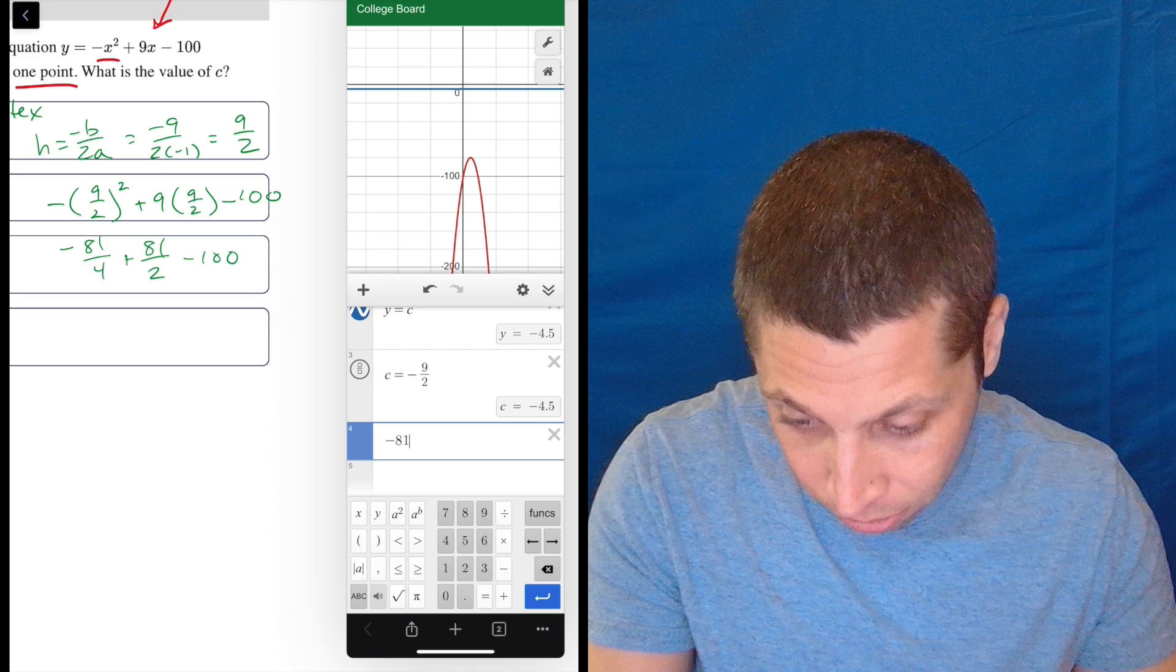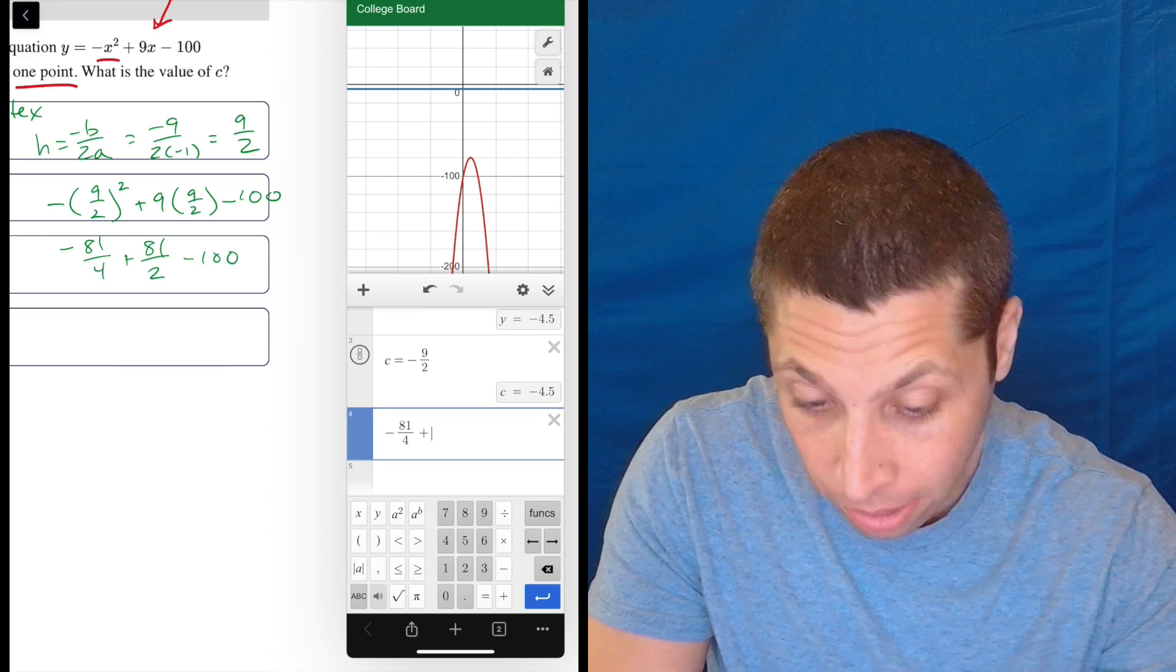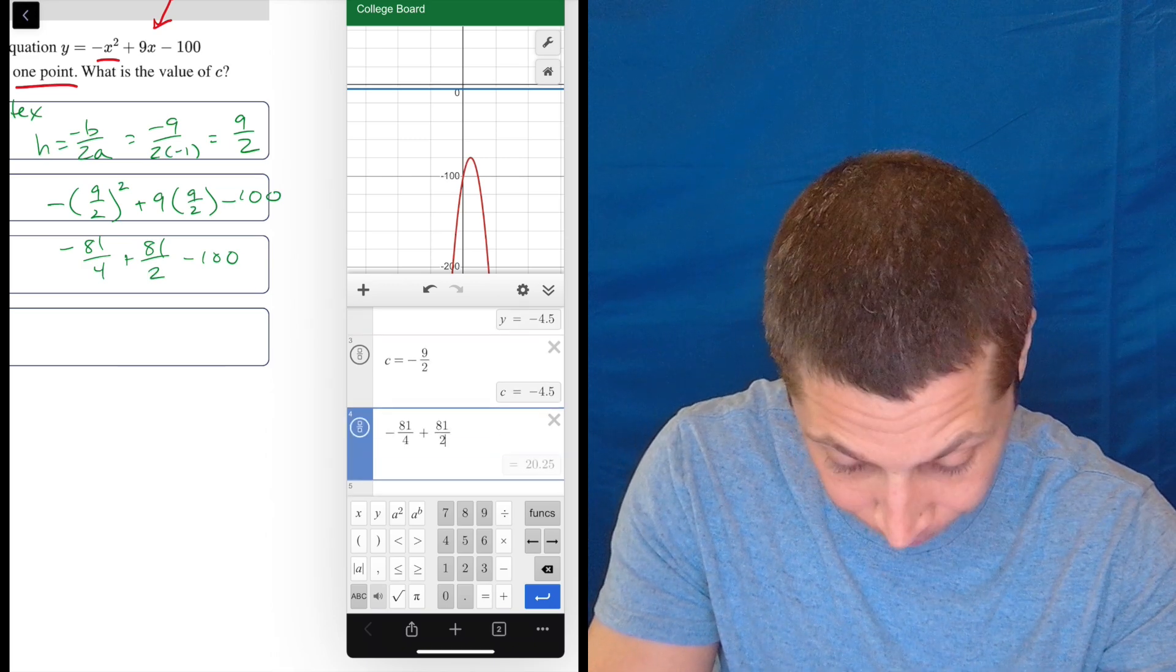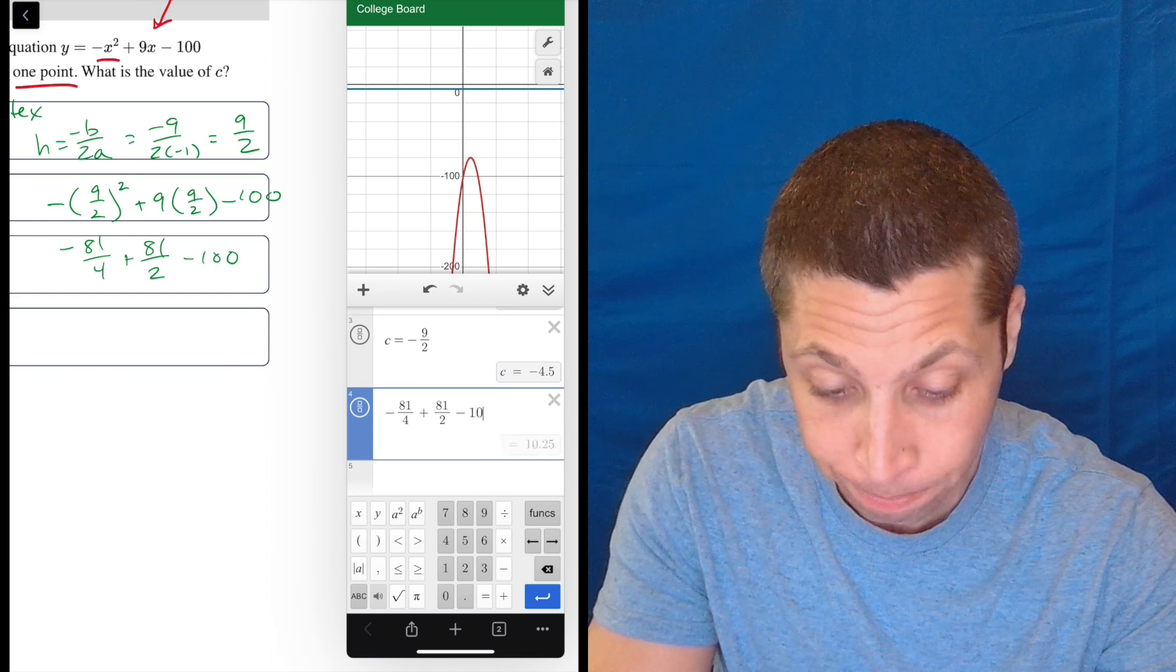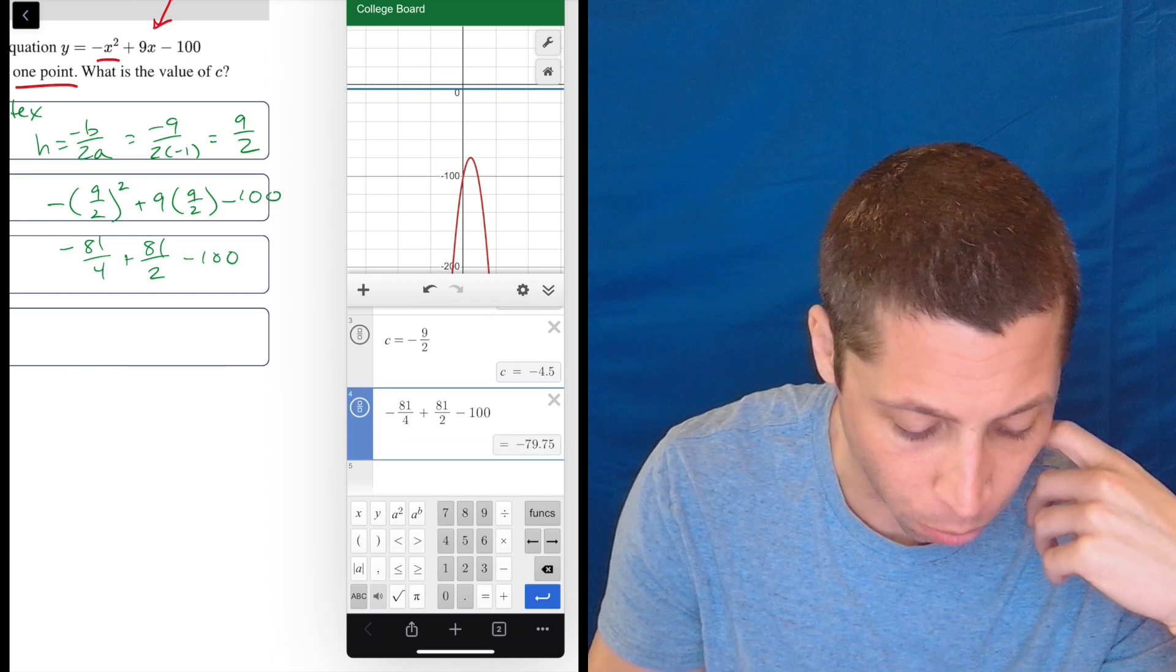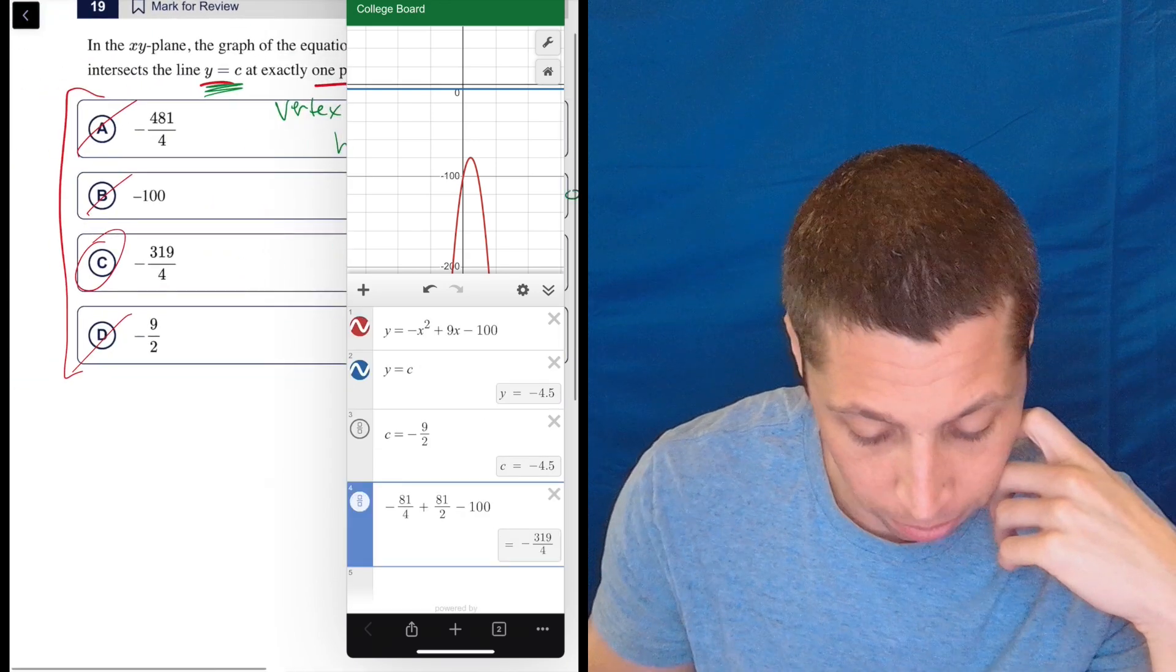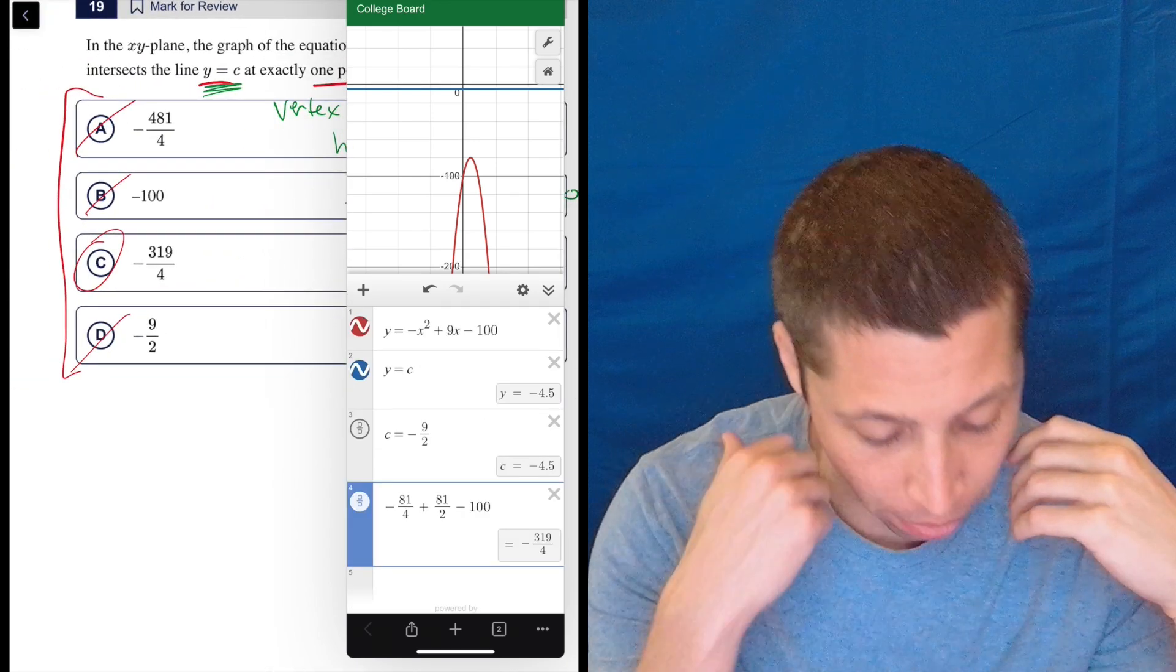So negative 81 divided by 4 plus 81 halves minus 100. And it gives you it as a decimal, but remember, you can tap the right underneath the 4 there. You've got the little fraction button, and it'll do it. Negative 319 over 4, which is what we got. So that's one method you can use.